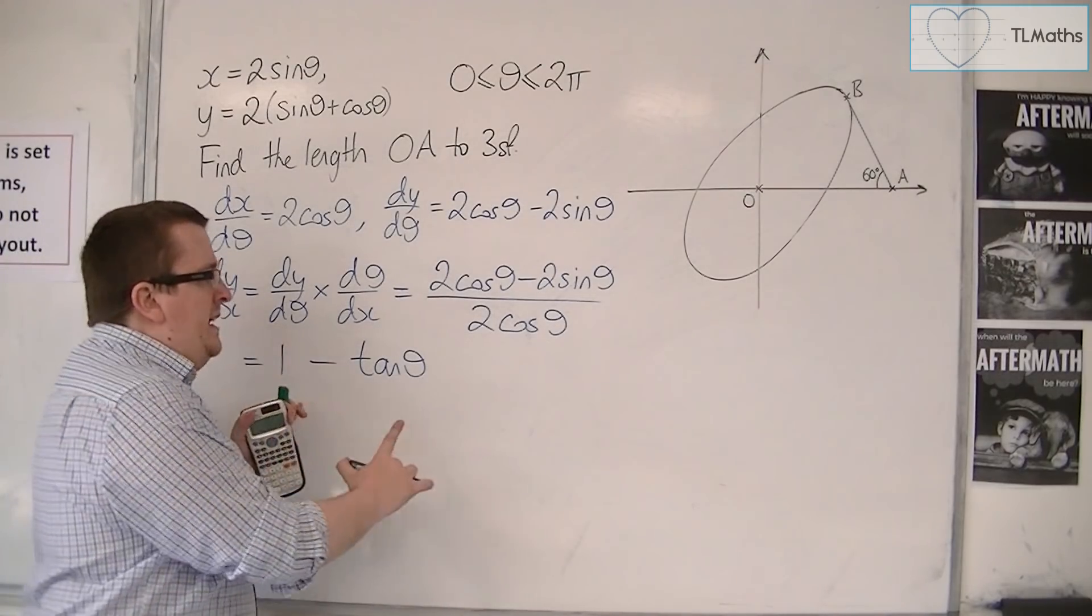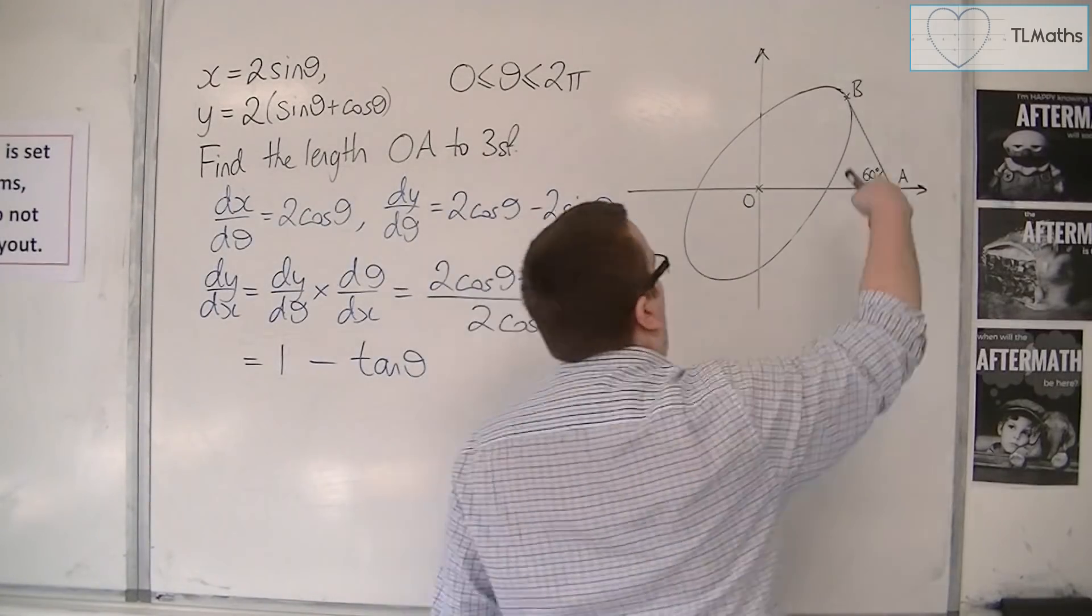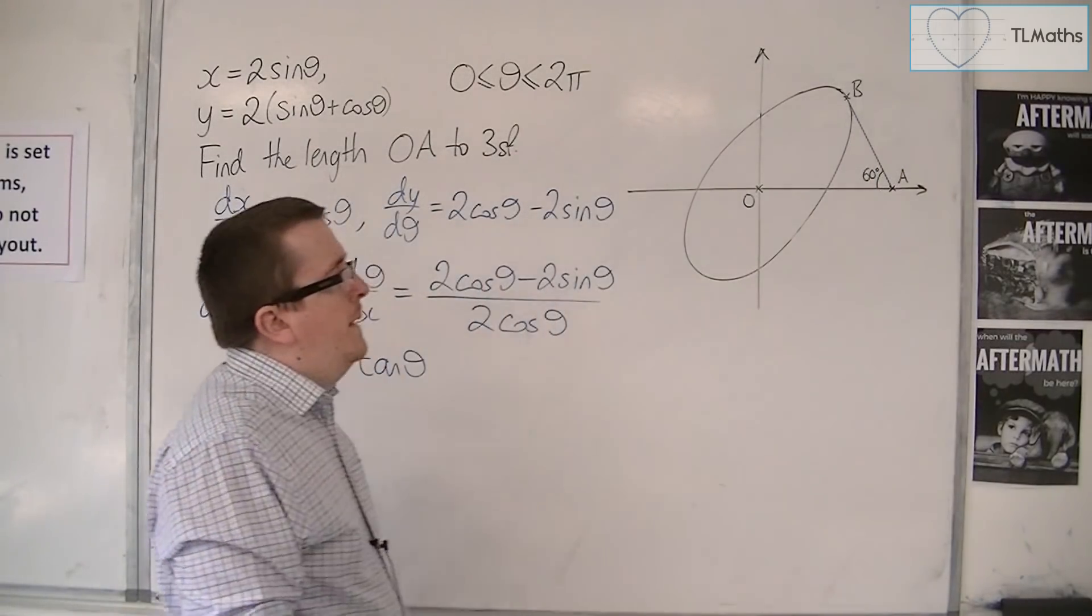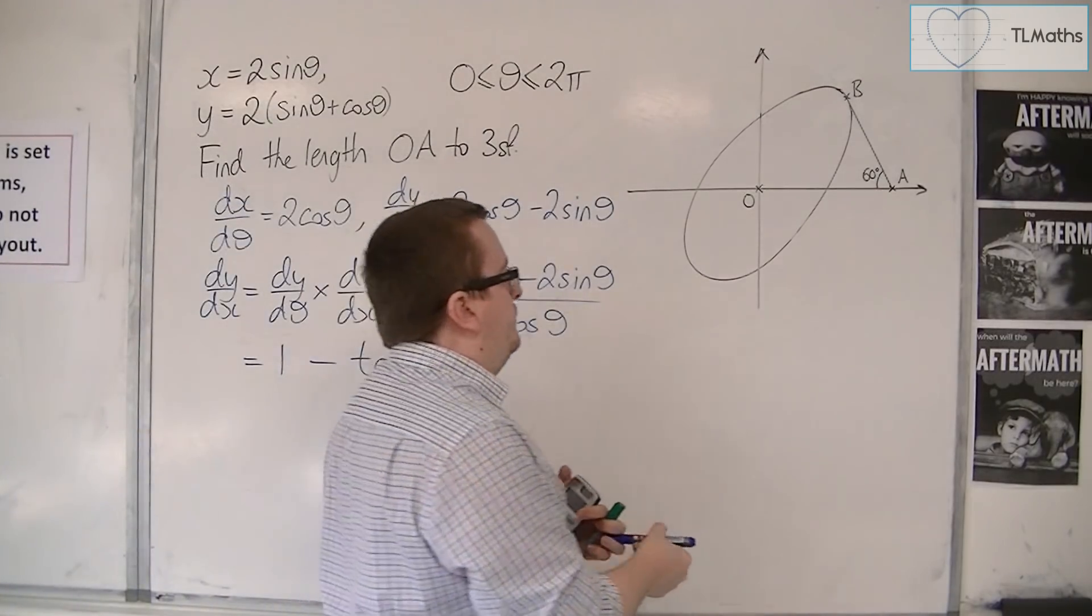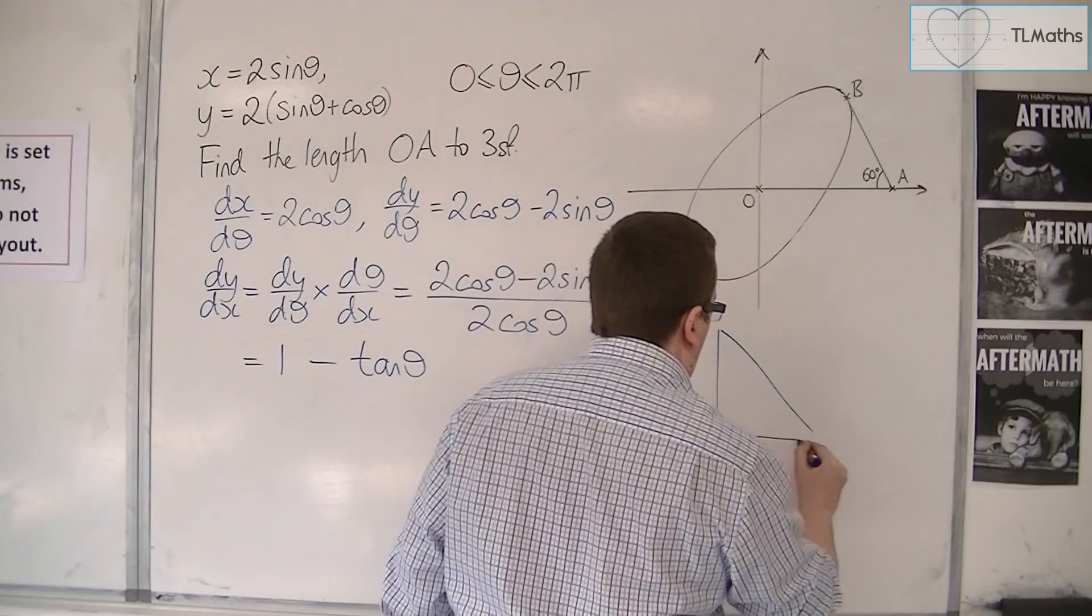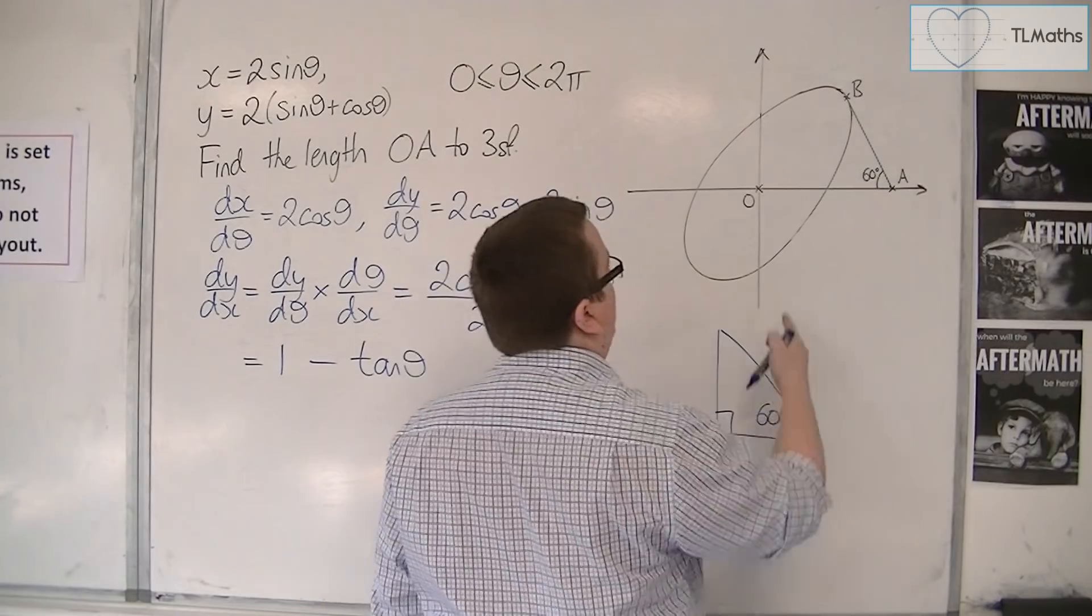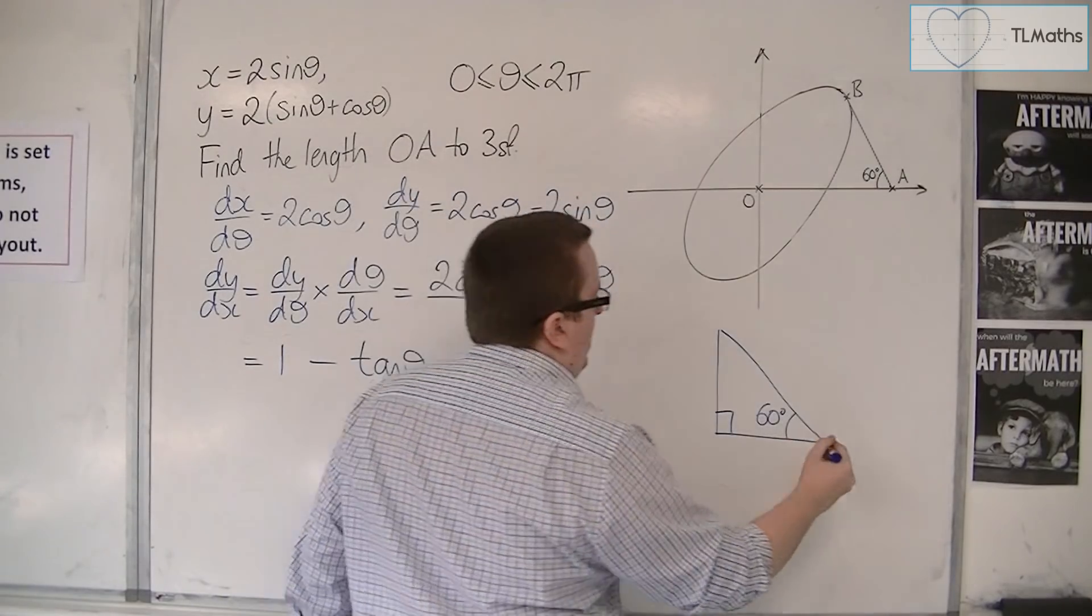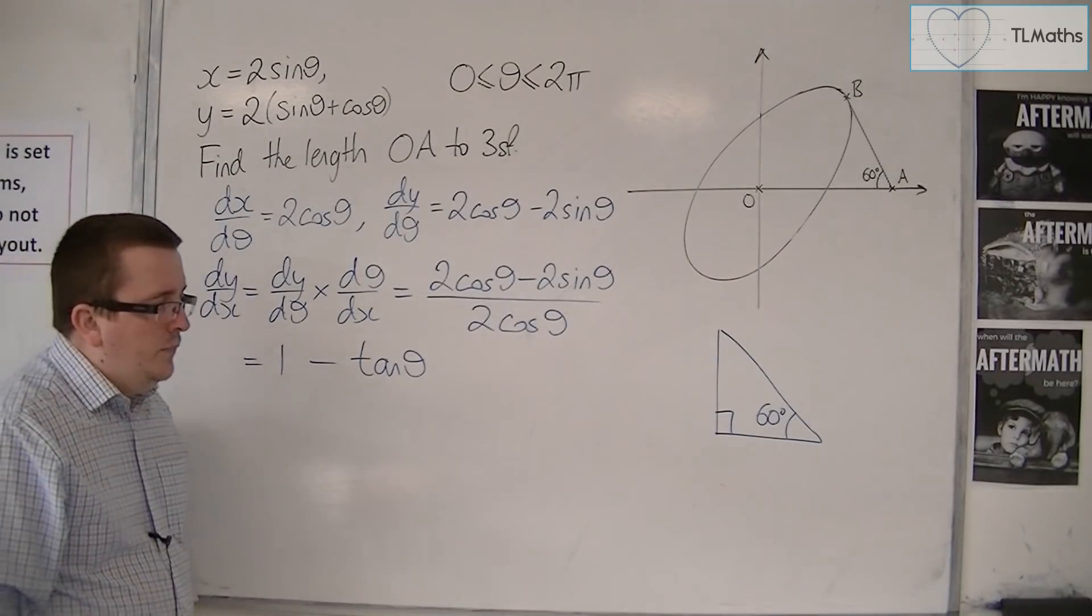I need to put this equal to the gradient of that tangent line. Let's redraw this triangle. The triangle is making this 60 degree angle. Here's A and that's B effectively.